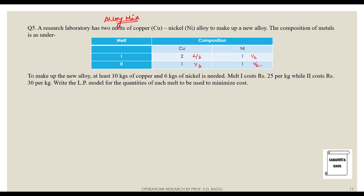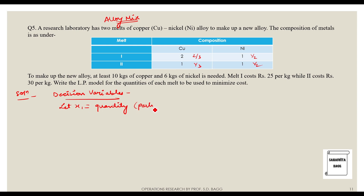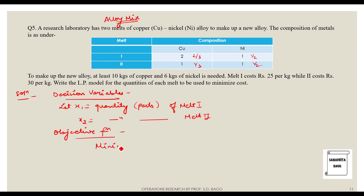Melt one costs rupees 25 per kg while melt two costs rupees 30 per kg. The LP model is to minimize cost. Let x1 be the quantity in parts of melt 1 and x2 be the quantity in parts of melt 2. The objective function is: minimize z = 25x1 + 30x2.